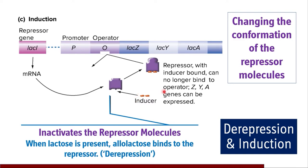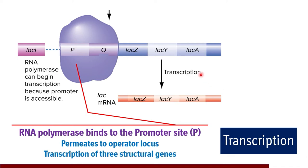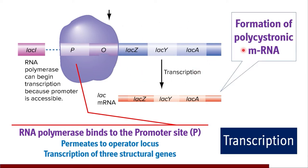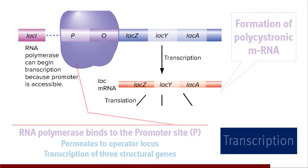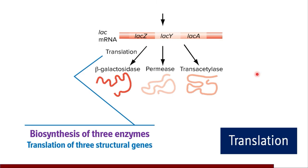When lactose is present, allolactose binds to the repressor and exerts its derepression effect, inactivating the repressor molecules — hence the process is called derepression of the lac operon. The DNA-dependent RNA polymerase then attaches to the promoter site and proceeds to the now-free operator locus. Transcription of the three lactose-utilizing structural genes takes place, producing a polycistronic mRNA, which undergoes translation to produce beta-galactosidase, permease, and transacetylase.